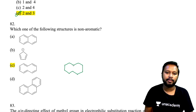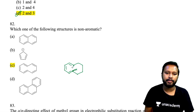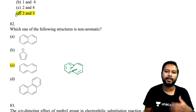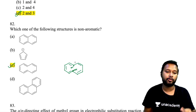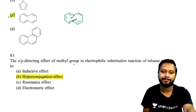The next question asks which structure is non-aromatic. Looking at all options, option 3 is the non-aromatic one. The reason: the hydrogens on the two relevant carbons are not in the same plane — one is above and one is below the plane. Since the molecule is not planar, it is non-aromatic.